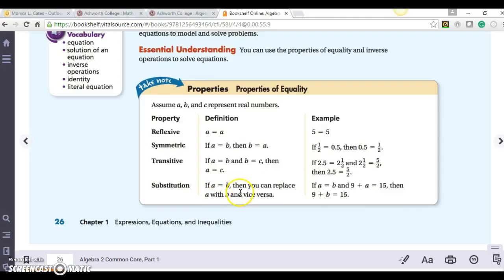And in substitution, if A equals B, then you can replace A with B and vice versa. So if A equals B, then 9 plus A equals 15, then 9 plus B equals 15.